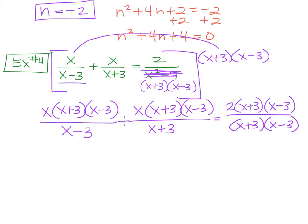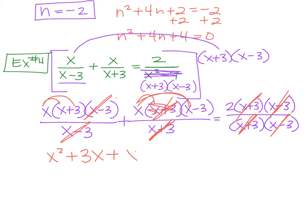So now we start reducing x minus 3 and x minus 3. x plus 3 and x plus 3. And then x plus 3 with x plus 3. x minus 3 with x minus 3. So what we're left with, and at this point, you can start distributing, x squared plus 3x plus 3x, oh, not that one. Sorry. This one's gone. x squared minus 3x equals what? Equals 2. You just have a 2 left there.